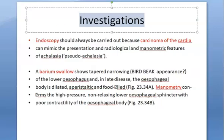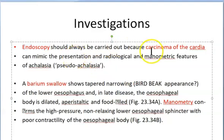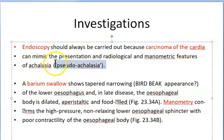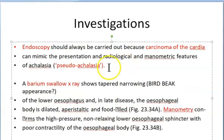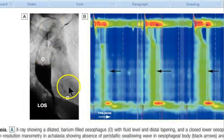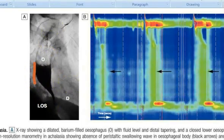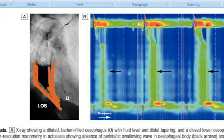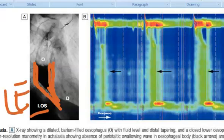For investigations, you can do endoscopy — put a scope in, go till the stomach, and check if there is carcinoma of the cardia, to rule out pseudo-achalasia. Then barium swallow X-ray: here you can see how the esophagus is dilated and at the lower end it has tapered — that is the bird beak appearance. LES stands for lower esophageal sphincter, and D is diaphragm.